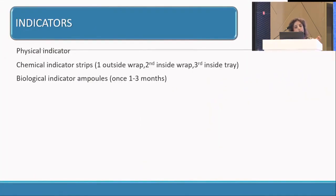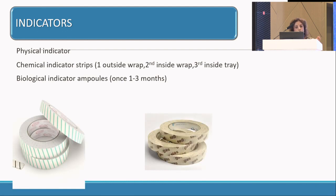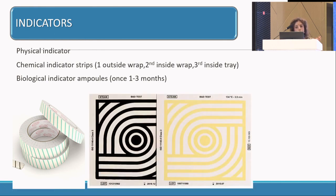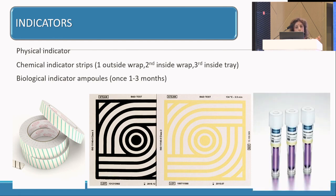Coming to indicators: the physical strip indicator is used in autoclave surgical instrument trays, while the gas indicator is used for ETO. Stickers are kept on the roll packing material used to pack the instruments. The Bowie-Dick test is also used for checking the sterility of hollow tubings. Biological ampoules should be used once every three months to assess the efficiency of the autoclave.